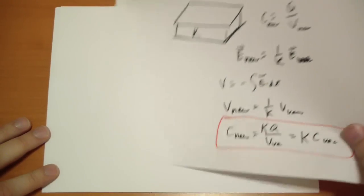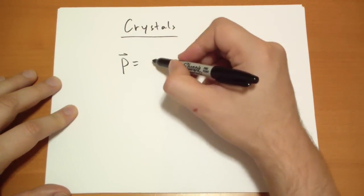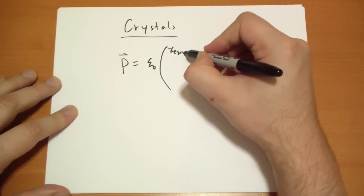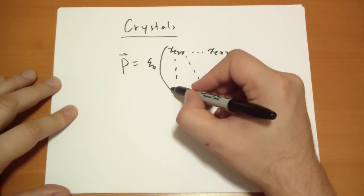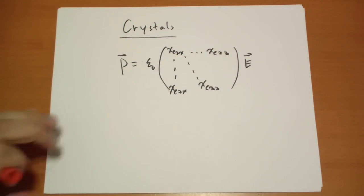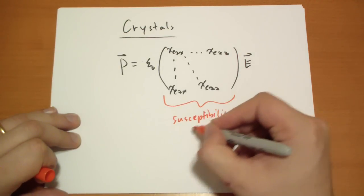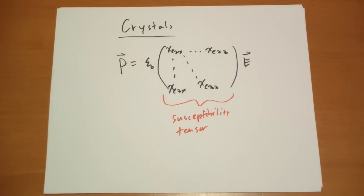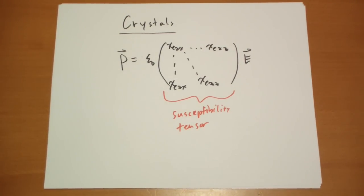One last note: what if you have a crystal that behaves like a linear dielectric in one direction but differently in another? In that case the polarization equals ε₀ times a 3×3 susceptibility tensor multiplied by the electric field, with components like χ_xx, χ_xy, χ_xz, χ_zx, etc. This susceptibility tensor gives interesting results for how crystals behave in electric fields. And of course, too much E will still ionize the material.